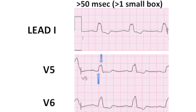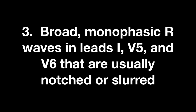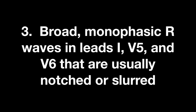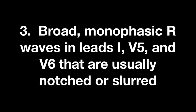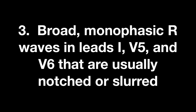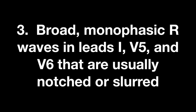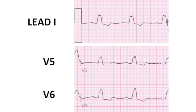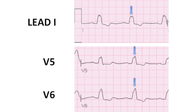The third ECG criteria is a broad monophasic R wave in leads I, V5, and V6 that are usually notched or slurred. Looking at leads I, V5, and V6, you will see that the QRS complexes in lead I and V5 are notched, and the QRS complex in lead V6 is slurred.